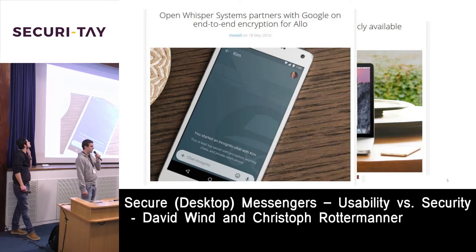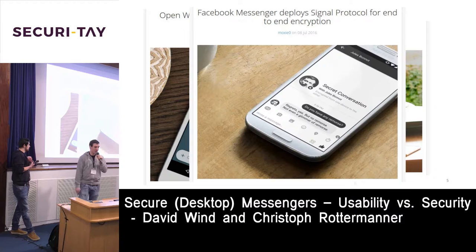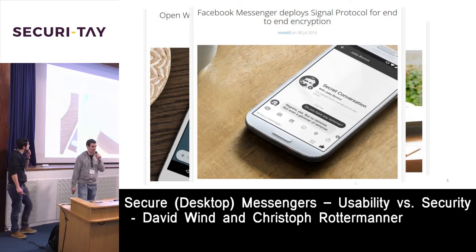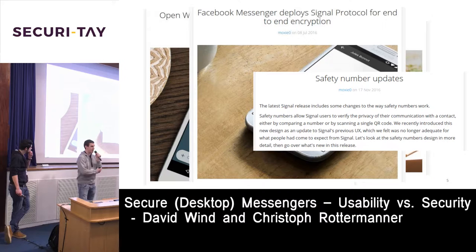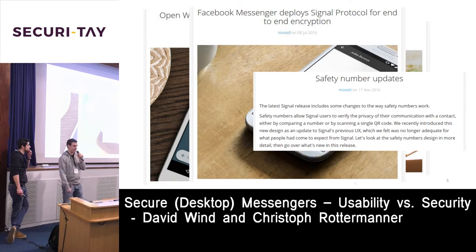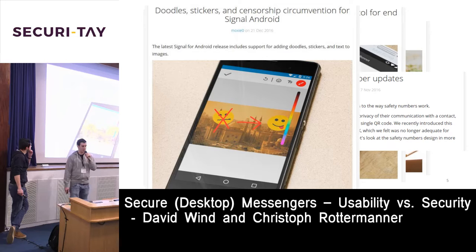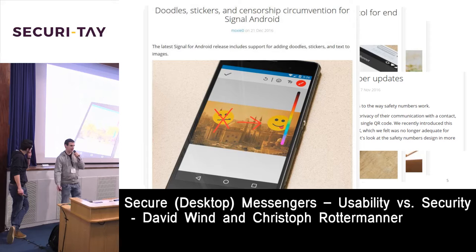Google also decided to implement the end-to-end encryption Signal Protocol for Allo, and Facebook did the same. All the big companies decided to implement this great protocol. Signal also changed the verification page — previously there were two fingerprints to compare, but now there is a single safety number. Signal additionally implemented censorship circumvention, so users in countries that block Signal can still use it.